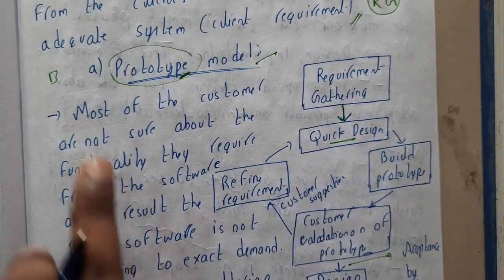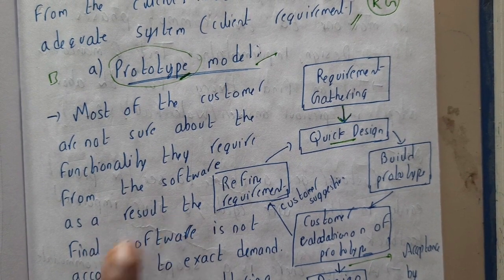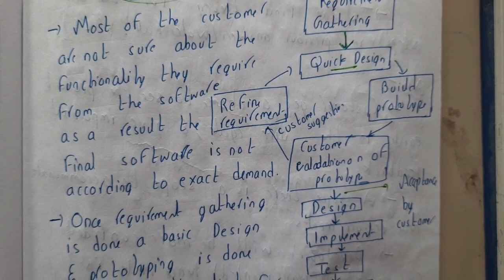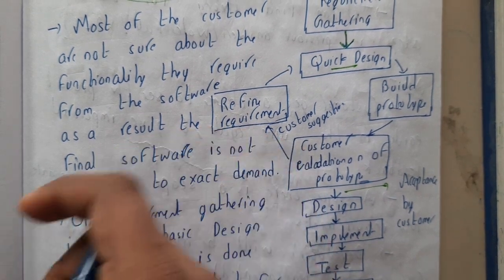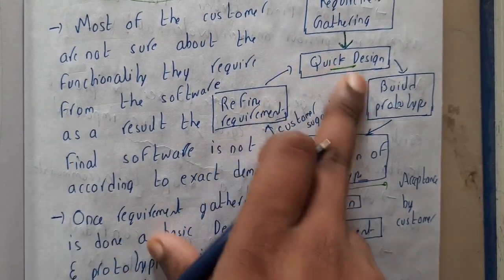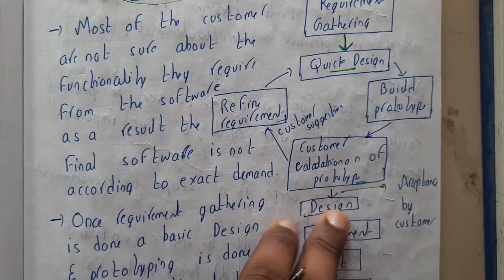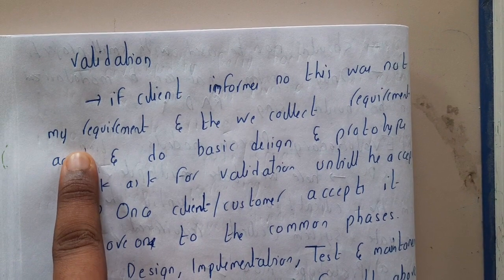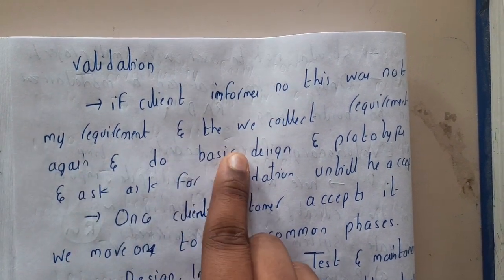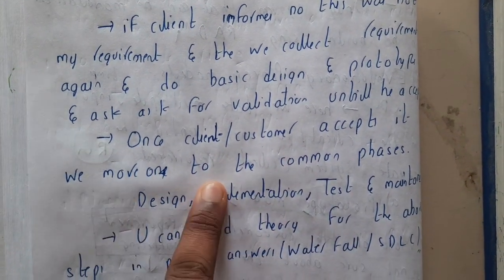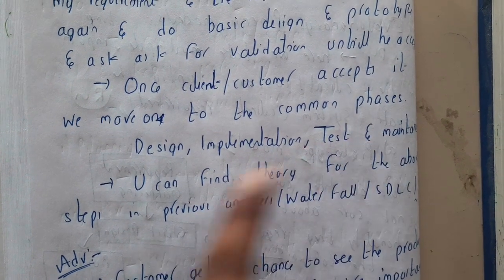Most of the customers are not sure about the functionalities they require for the software. As a result, the final software is not according to the expected demand. Basically why most of the products will not be according to the client requirement? Because of the requirement gathering, because requirement gathering is not happened properly. In those cases only we will be ending up with a wrong product at the end. That is the reason why we will be doing multiple iterations in this requirement gathering until the customer accepts the item. Once requirement gathering is done, a basic design prototype is done and we will be showing it to the client for validation. If client informs no, this was not my requirement, we will collect the requirements again to do the basic design and prototype and ask him for validation until he accepts it.